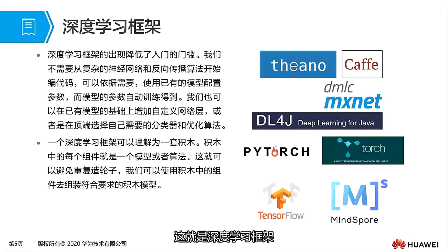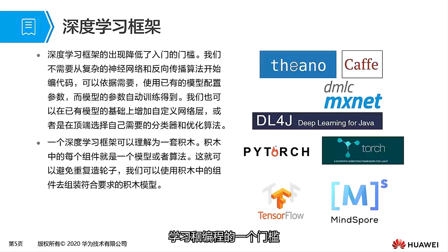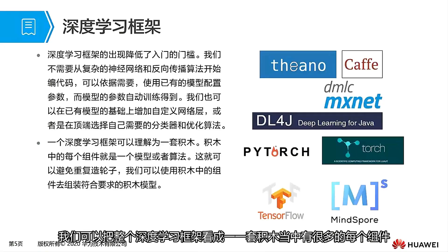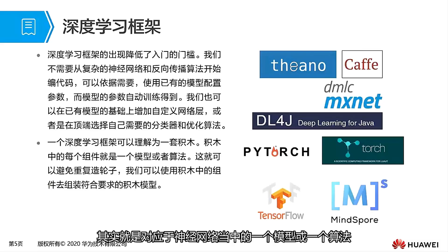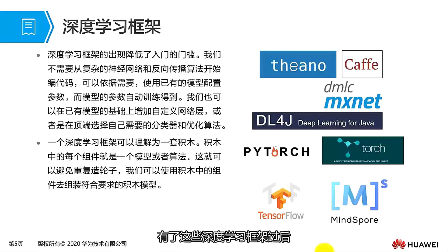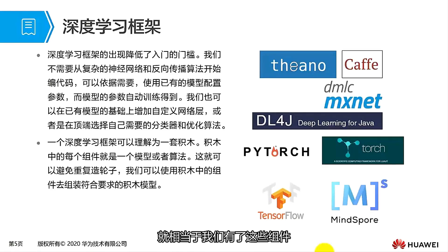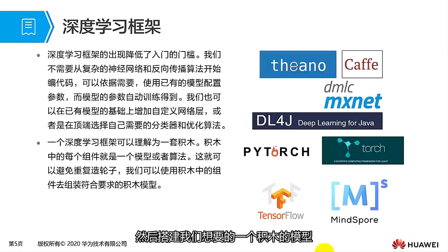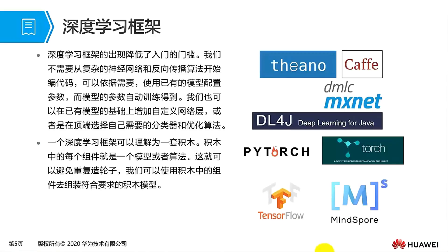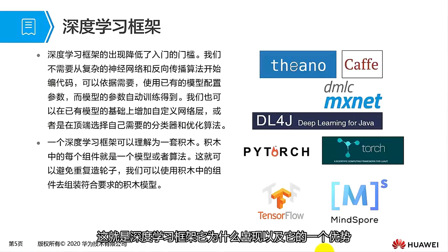The main purpose of deep learning frameworks is to lower the threshold for learning and programming deep learning. We can see the entire deep learning framework as a set of building blocks. Each component corresponds to a model, an algorithm, or a network layer in neural networks. With these frameworks, we don't have to reinvent the wheel because these components allow us to freely combine and build the model we want according to certain rules. This explains the emergence and advantage of deep learning frameworks.